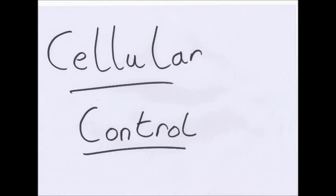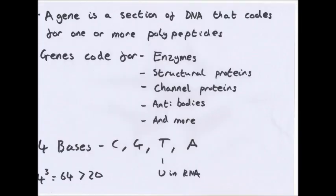Hello and welcome to my next video on cellular control. A gene is a section of DNA that codes for one or more polypeptides. A polypeptide is a chain of proteins, also known as a polymer.